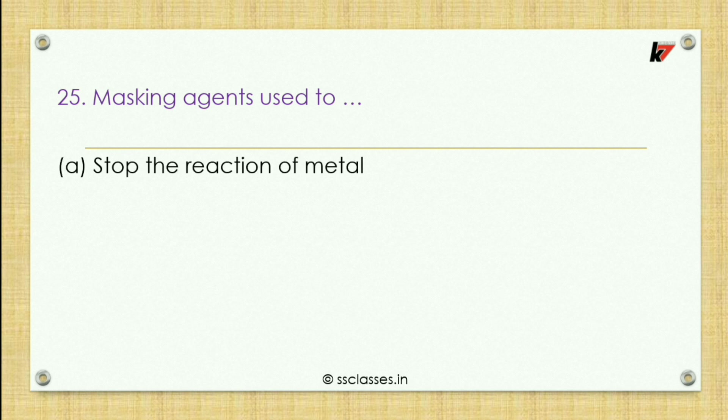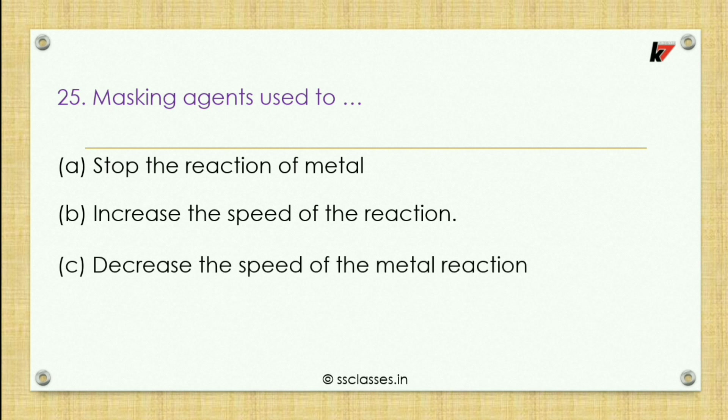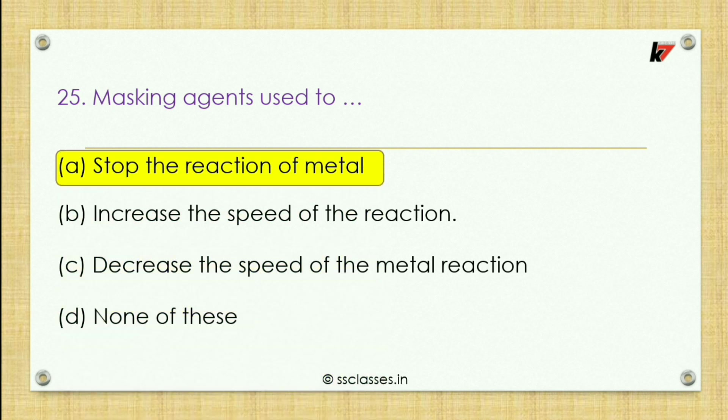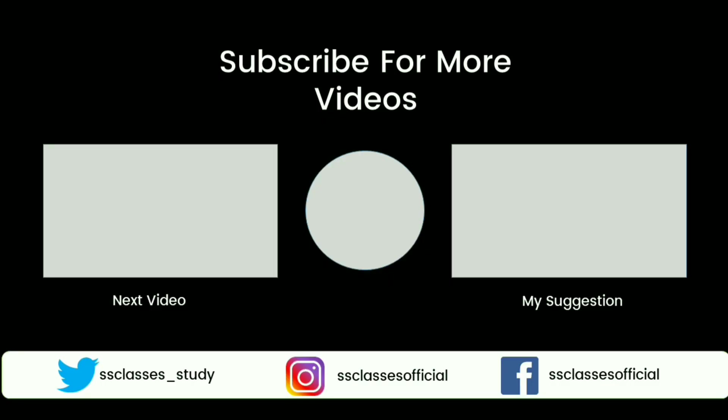Last question: what is the use of masking agents? Options: stop the reaction of metal, increase the speed of reaction, decrease the speed of metal reaction, or none of these. The correct answer is stopping the reaction of metal. I hope all the questions were very important for the chapter solvent extraction. We are 100% providing accurate answers. Give thumbs up, subscribe to the channel, and meet in the next video — until then, keep studying. Goodbye.